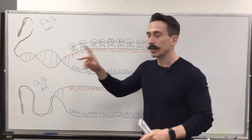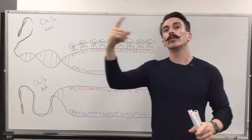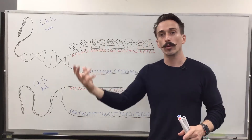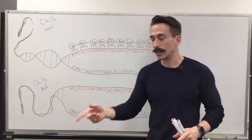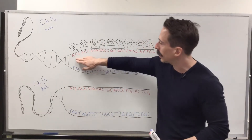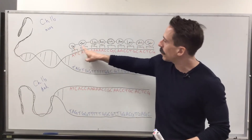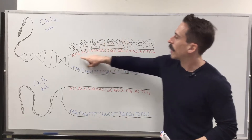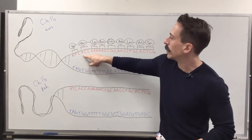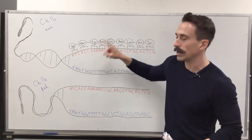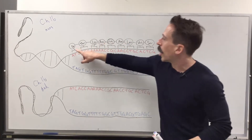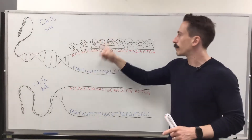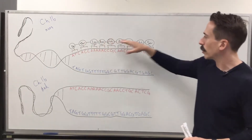We know that DNA encodes for RNA which then encodes for amino acids, and you can see here that these are the amino acids encoded by each of these three letters: isoleucine, threonine, lysine, asparagine, arginine, and so forth.